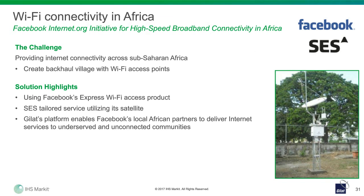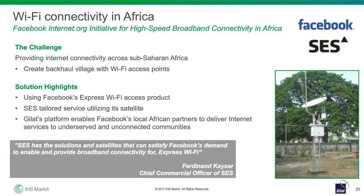In this next example, it's about creating a Wi-Fi village — an initiative of Facebook in Africa called internet.org, to bring high-speed broadband connectivity to sub-Saharan Africa. They created a backhaul village Wi-Fi access point, done together with partner SES, the satellite operator, who tailored the service utilizing their satellite. It was Gilat's equipment and platform that enabled Facebook's local ISPs in Kenya and Nigeria to deliver internet services to underserved and unconnected communities. SES stated in their press release that they have the solutions and satellites to satisfy Facebook's demand to enable broadband connectivity for Express Wi-Fi.